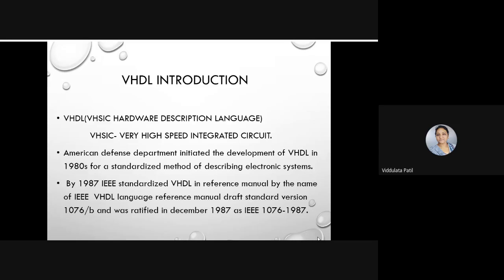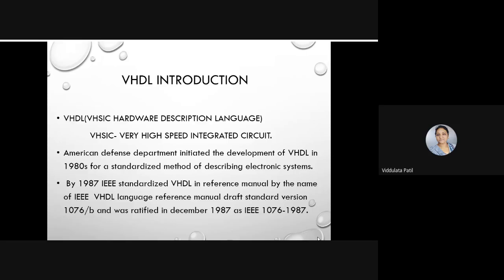VHDL was first developed in the 1980s as a standardized method of describing electronic systems. In 1987, IEEE standardized VHDL in a reference manual by the name IEEE VHDL Language Reference Manual, that is a draft of standard version 1076B. It was ratified in December 1987 as IEEE 1076-1987.